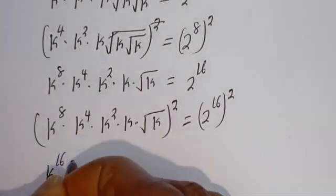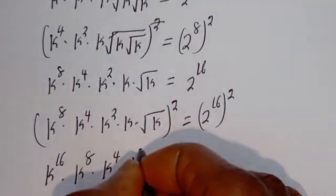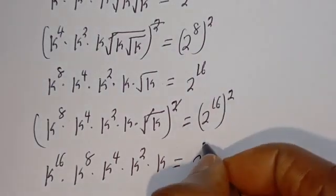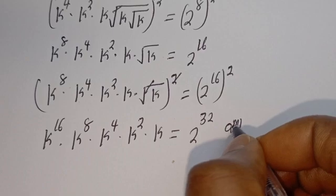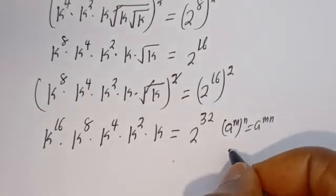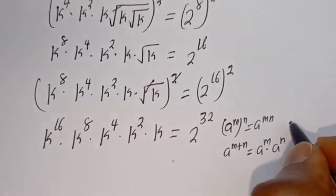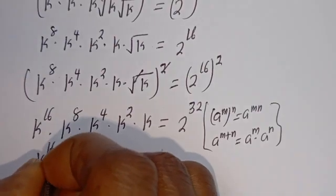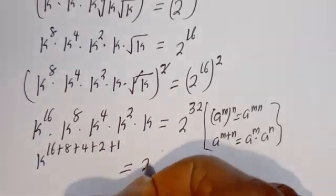After squaring both sides repeatedly, we arrive at k to the power of 16, multiplied by k to the power of 8, multiplied by k to the power of 4, multiplied by k squared, multiplied by k, equal to 2 to the power of 32. Using the rule that A to the power of M times A to the power of N equals A to the power of M plus N, this can be written as k to the power of 16 plus 8 plus 4 plus 2 plus 1, equals 2 to the power of 32.